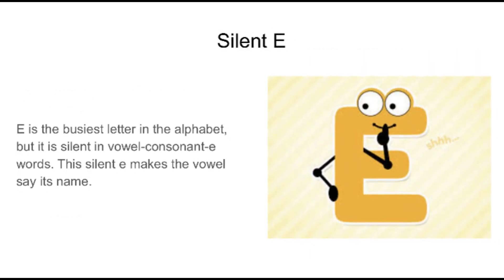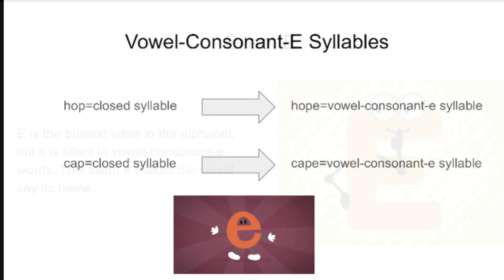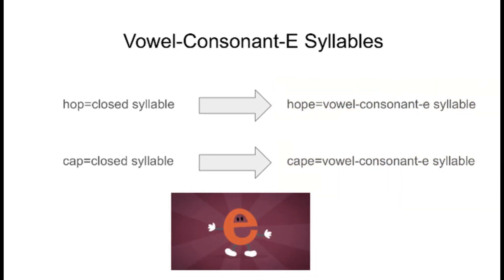We say that E is the busiest letter in the alphabet, but it is silent in vowel consonant e words. It doesn't make a sound. Instead, it makes the vowel say its name or have a long sound. The difference between a closed syllable word and a vowel consonant e syllable word is the silent e and long vowel that a vowel consonant e syllable word has.